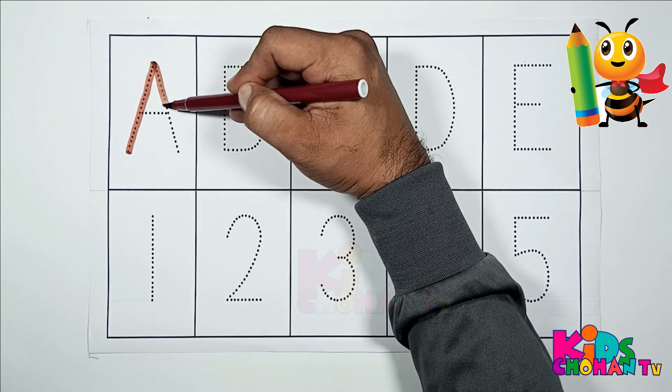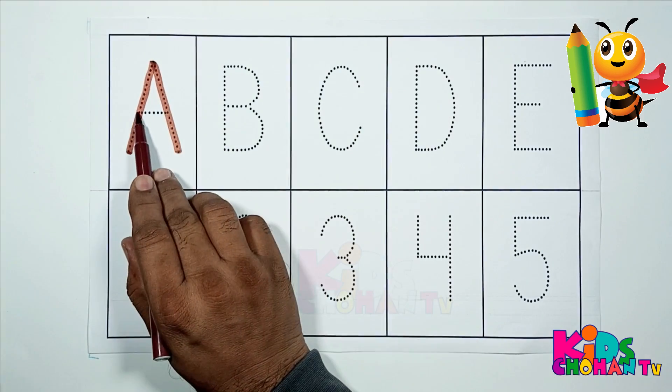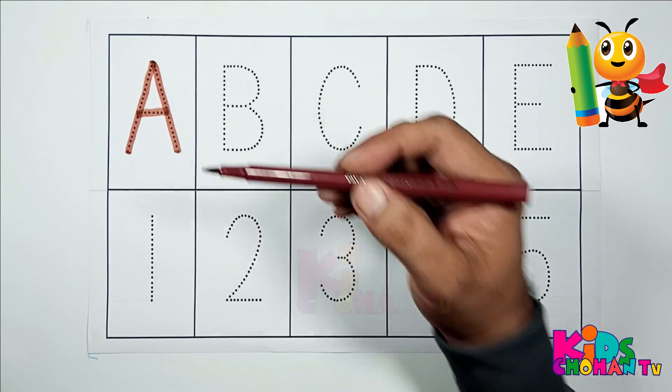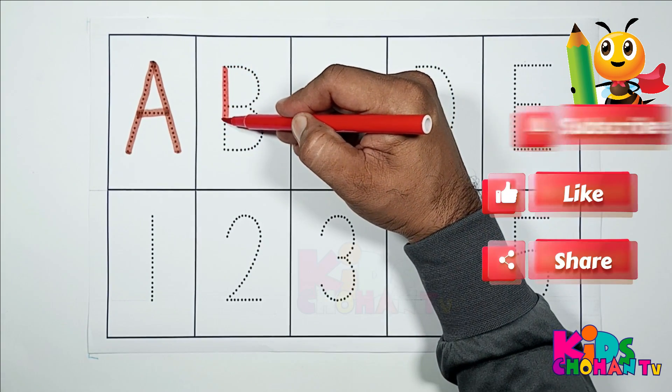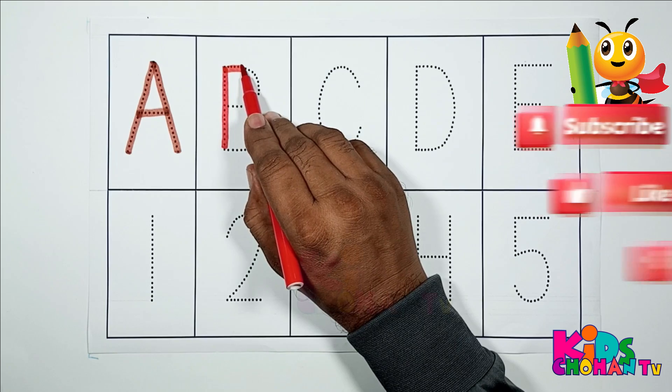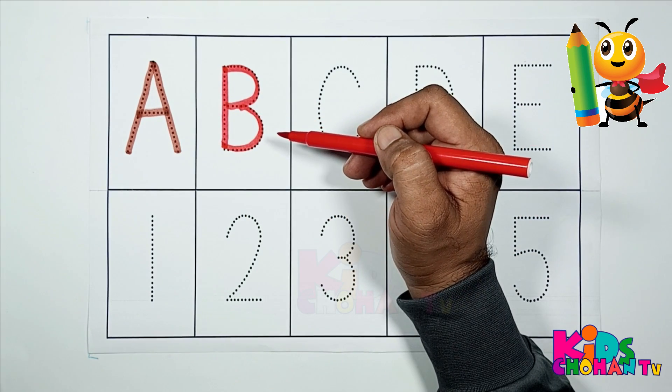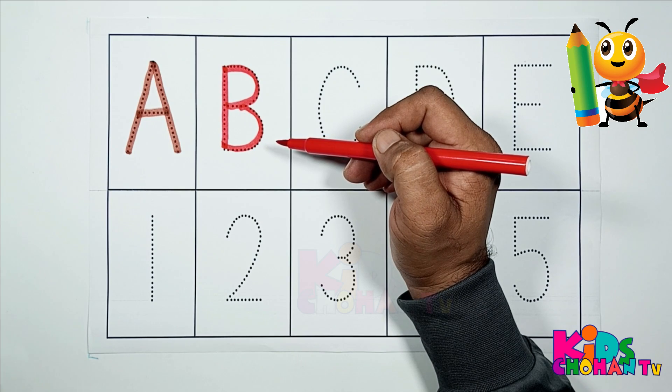This is letter A. A for apple. Kids, we are tracing letter B. This is letter B. B for butterfly.